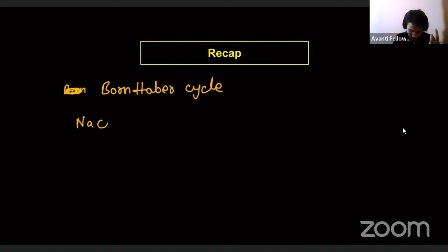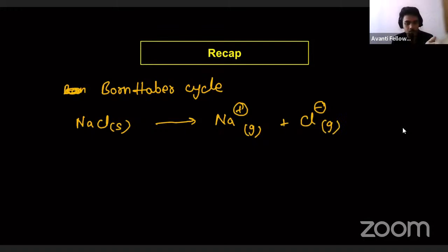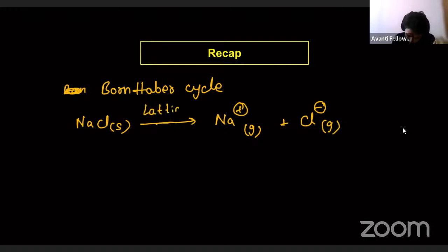Yesterday, what we discussed was NaCl solid converting into Na⁺ ion in gaseous form plus Cl⁻ ion in gaseous form. Whenever we are converting this solid NaCl 3D crystal into single ions, two gaseous ion forms result. This energy is what we called lattice enthalpy.